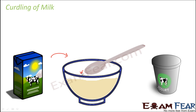The curdling of milk happens due to the presence of a bacteria called Lactobacillus, which is present in curd. This bacteria causes the proteins in the milk to coagulate — the proteins come together and form a lump-like structure. That is why milk is watery and fluid, while curd is thicker and has that lumpiness.